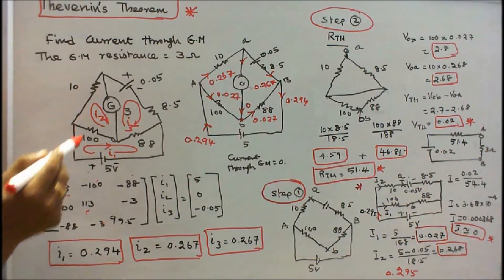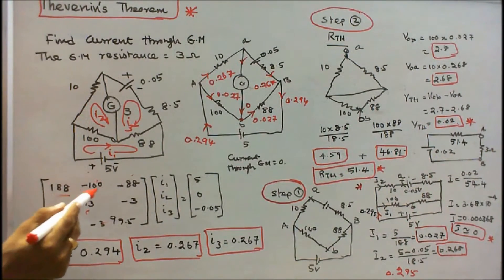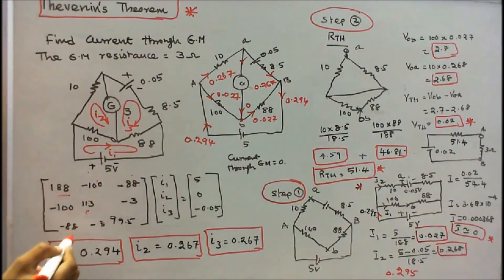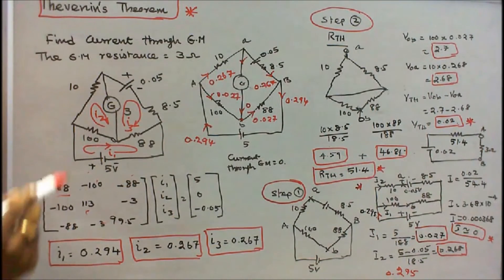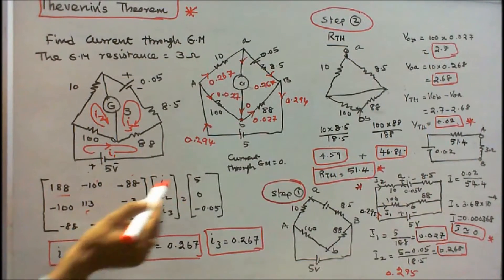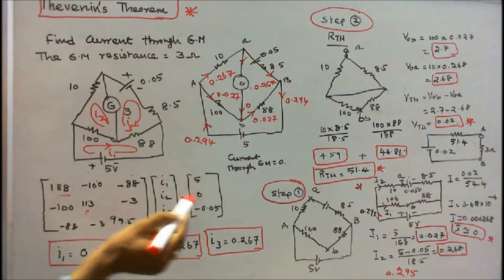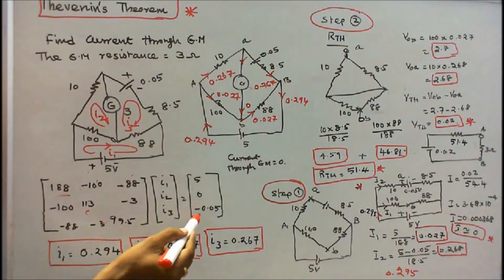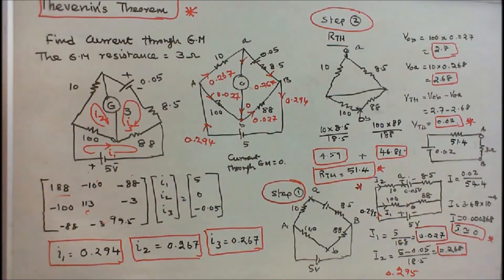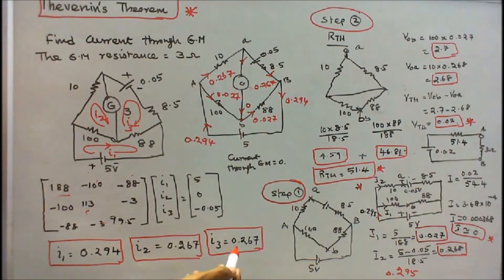Setting up the matrix equation with I1, I2, I3: the source voltages are 5 volts for the first loop, 0 for the second loop, and minus 0.05 volts for the third loop. Solving the matrix equation gives I1 equal to 0.294, I2 equal to 0.267, and I3 equal to 0.267.